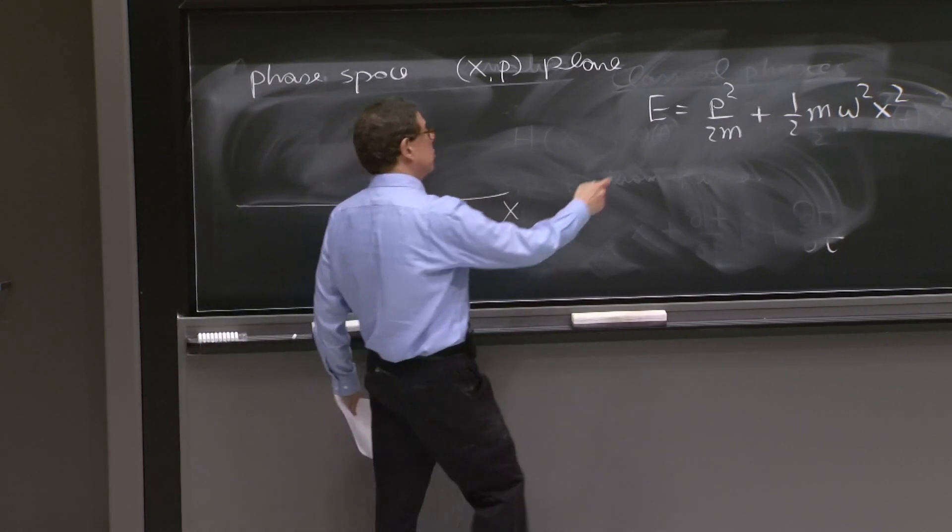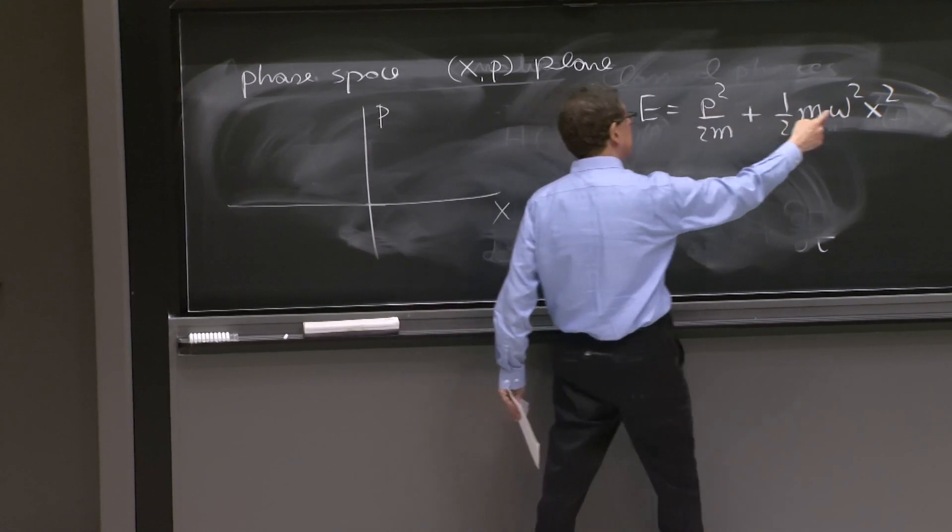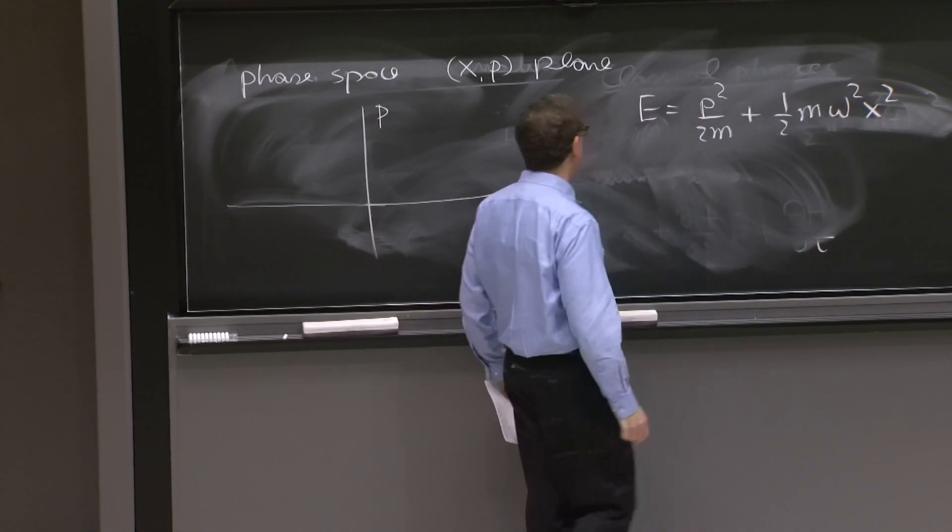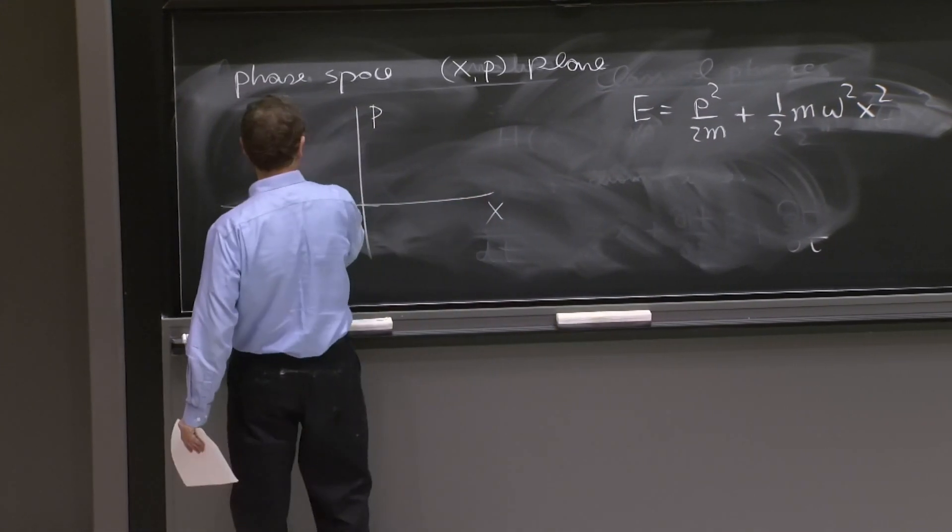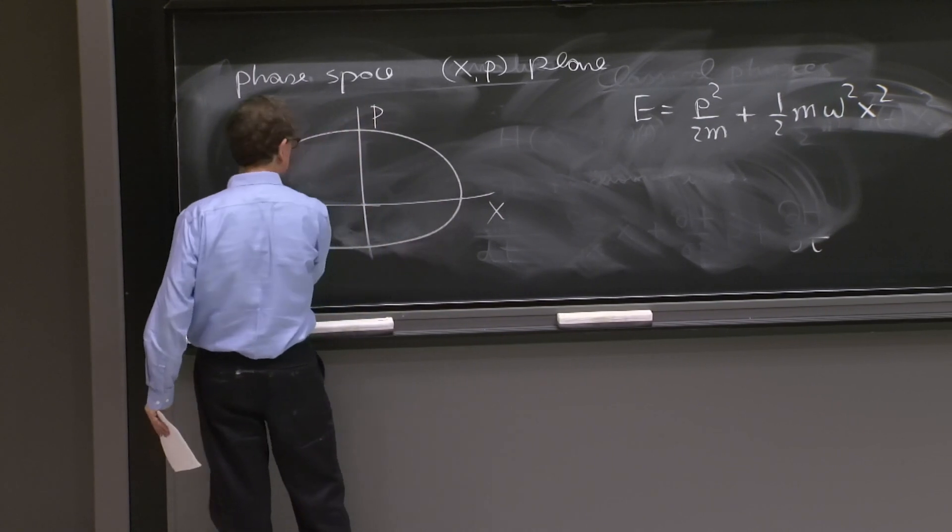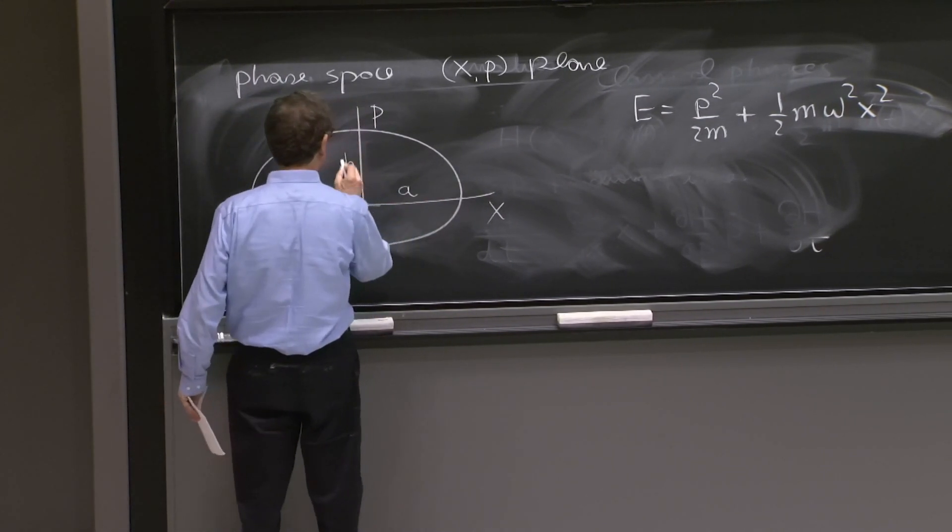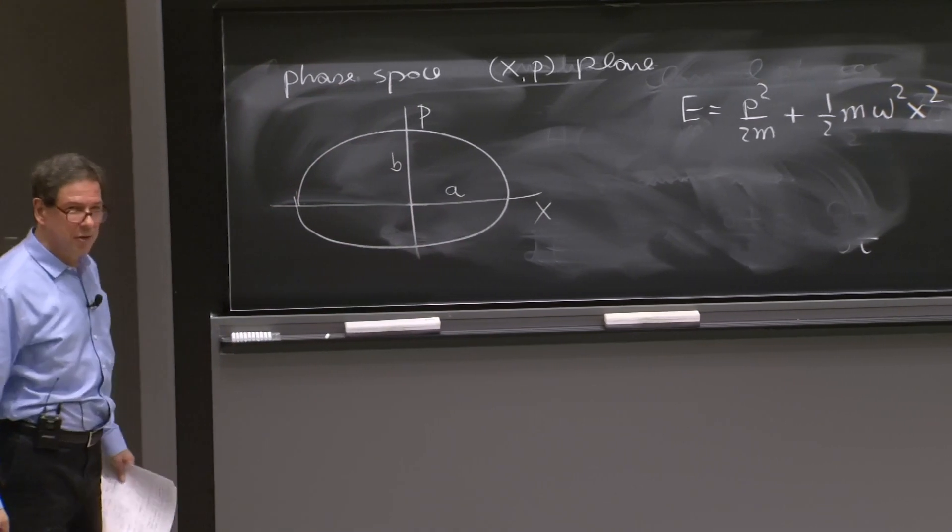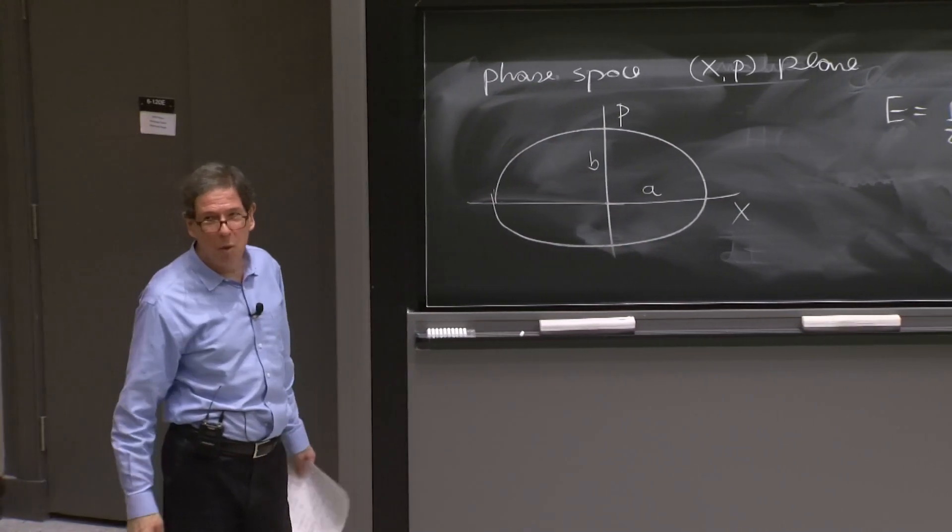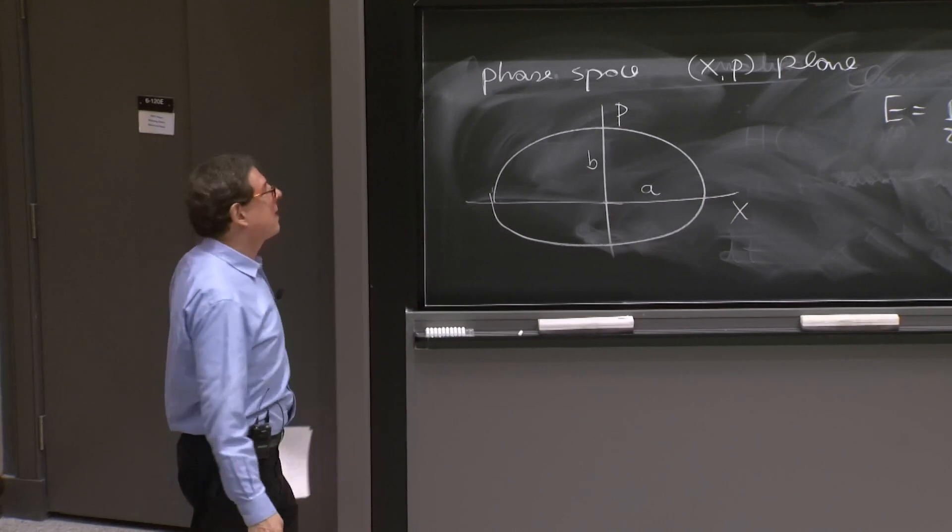That's because it's a sum of something squared plus something squared with different coefficients. So here it is, some sort of ellipse like that. Semi-major axis, semi-minor axis. I actually don't know which is the major and which is the minor, but two semi-axes.